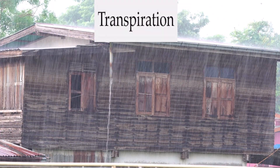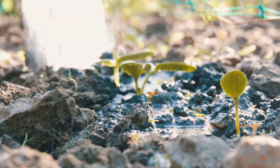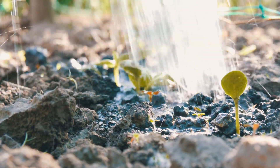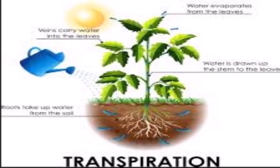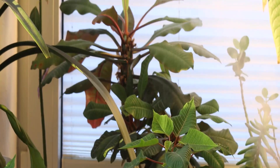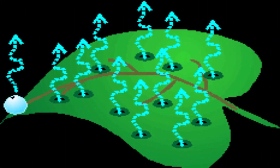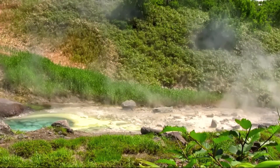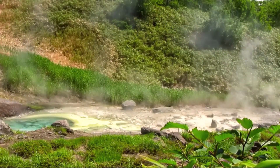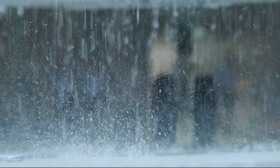As precipitation comes down, plants absorb the water, playing a crucial role in the water cycle as well. Through a process called transpiration, plants release excess water into the atmosphere through tiny pores on their leaves, adding significant amounts of water vapor to the air.